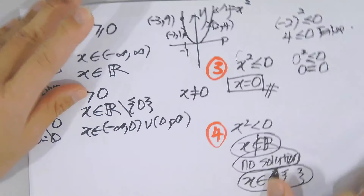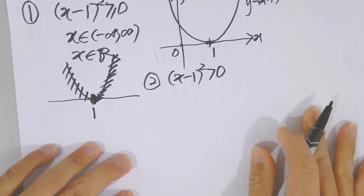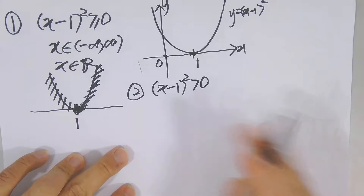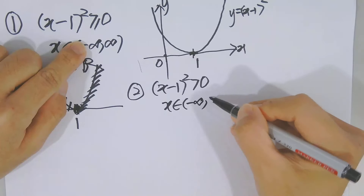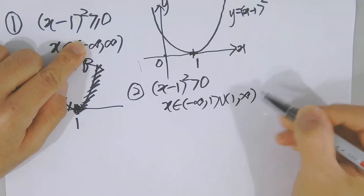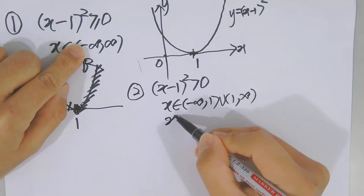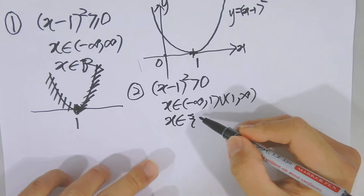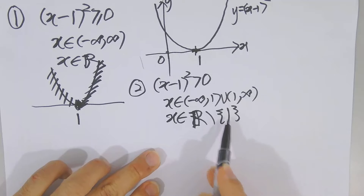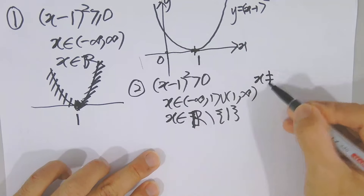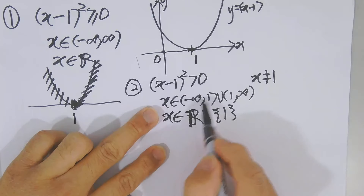Now the second applied case: if you have (x − 1)² > 0, the solution is different. The solution is x ∈ (−∞, 1) ∪ (1, +∞) — all real numbers but excluding x = 1. You exclude one number. Why? You can put any negative or positive value, less than or greater than 1, and you get a positive result.